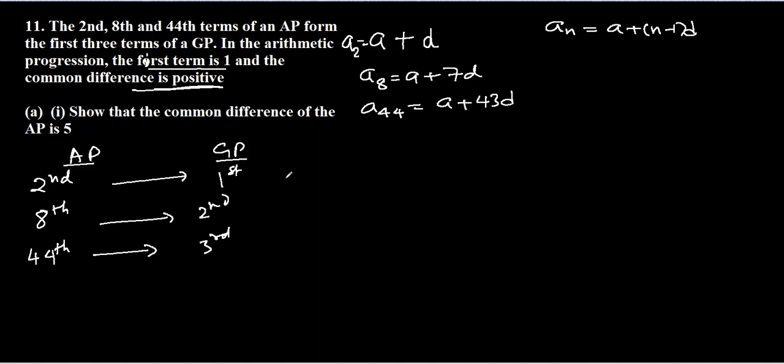Now these are the first three terms of geometric progression. That means if we divide a8 by a2, we will get r of GP, because this a8 is actually a2 of GP and this a2 of AP is a1. Similarly, the same r will be the third term, which is the 44th term of AP divided by the second term of GP.